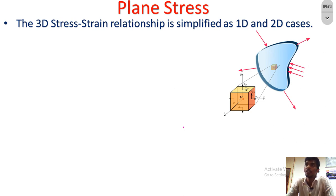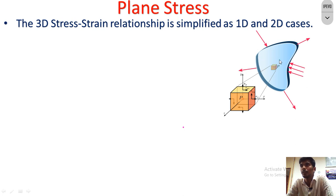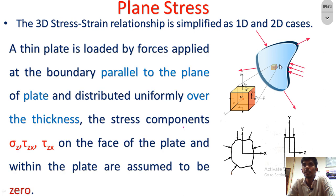The figure shows that a three-dimensional object is converted into a two-dimensional object. This 2D case is an example of plane stress. As the name indicates, the load is acting in a plane parallel to the structure — these are in-plane loads acting over the surface. A thin plate is loaded by forces applied at the boundary, parallel to the plane of the plate and distributed uniformly over the thickness.